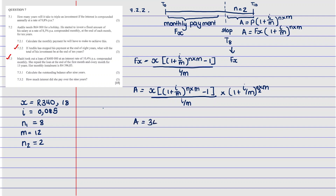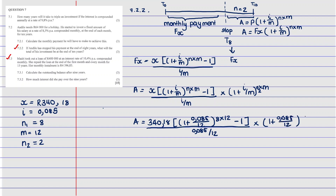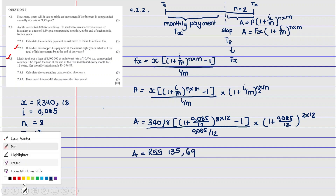Substituting: A = (340.18) × [(1 + 0.085/12)^(8×12) − 1] / (0.085/12) × (1 + 0.085/12)^(2×12). Pass this into the calculator and you get A = R55,135.69. That's how you calculate it.